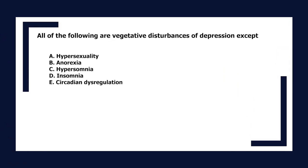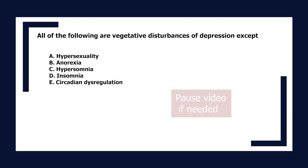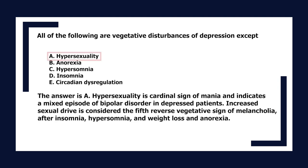All of the following are vegetative disturbances of depression except: A. Hypersexuality, B. Anorexia, C. Hypersomnia, D. Insomnia, E. Circadian dysregulation. The answer is A. Hypersexuality is a cardinal sign of mania and indicates a mixed episode of bipolar disorder in depressed patients. Increased sexual drive is considered the fifth reverse vegetative sign of melancholia, after insomnia, hypersomnia, and weight loss and anorexia.